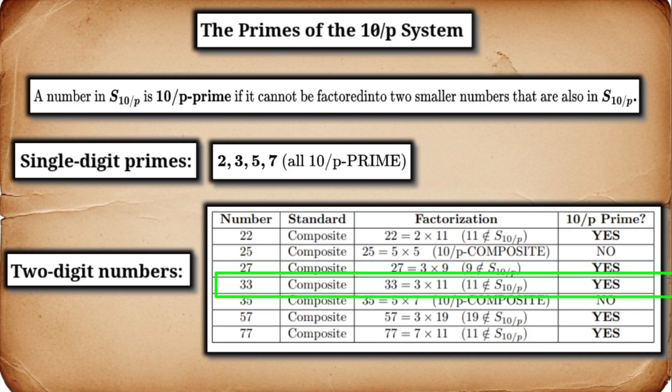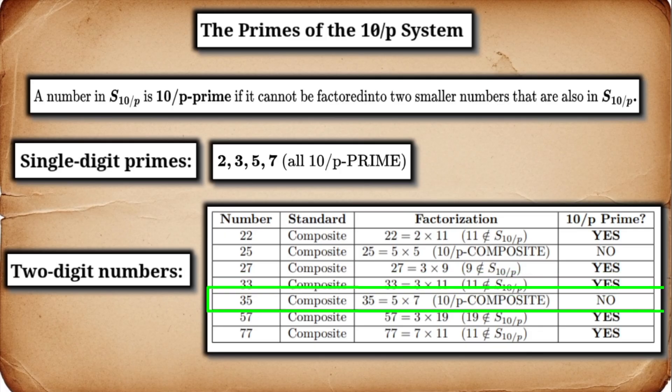33. Standard, 3 times 11. 11 is not in S10 over P. Therefore, 33 is a 10 over P prime. 35. Standard, 5 times 7. Both 5 and 7 are in S10 over P. Therefore, 35 is 10 over P composite.